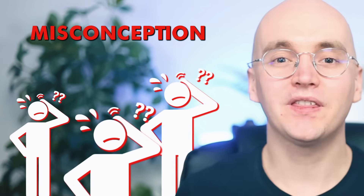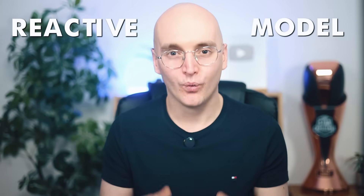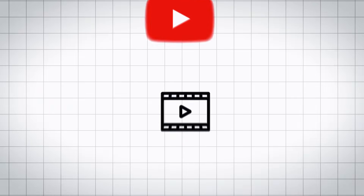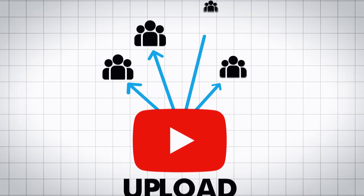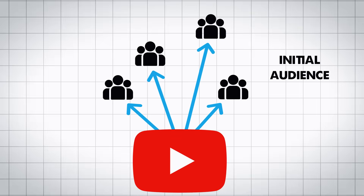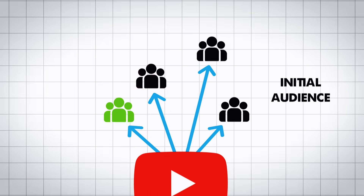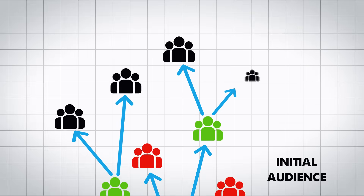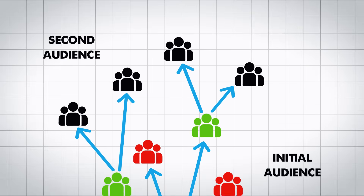Let's begin with the big misconception. When people think about the algorithm, they often think it's a reactive model. What I mean by this is that a lot of people think when you upload a video, it gets pushed to an initial audience, and then based on the reaction of that audience, it's going to decide whether to push it to a further audience or not.